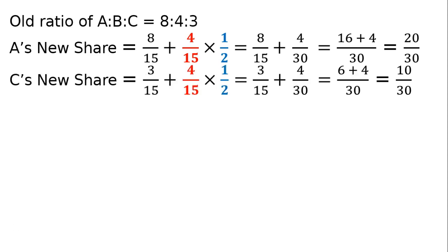C's new share: 3/15 plus half of 4/15, which is 4/30. So 3/15 + 4/30. LCM is 30. 30 divided by 15 is 2, times 3 gives 6, plus 4 in the numerator, whole divided by 30 equals 10/30.